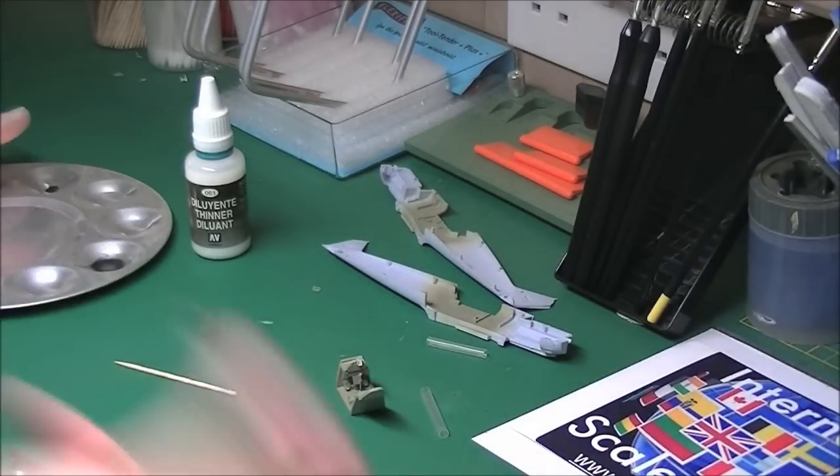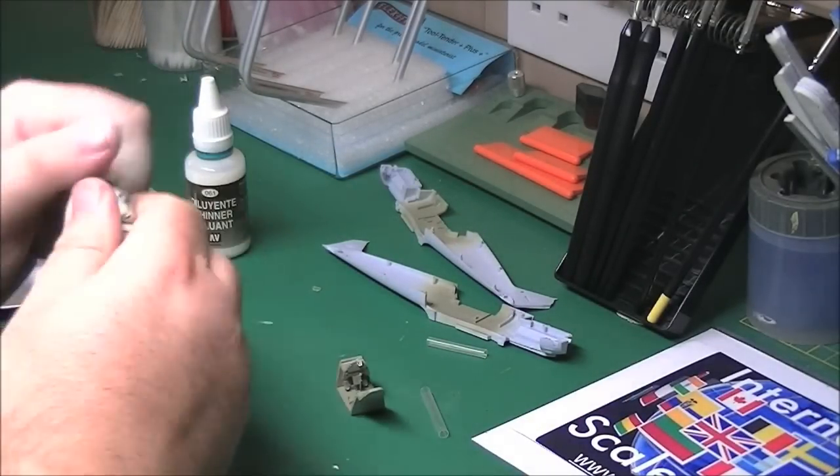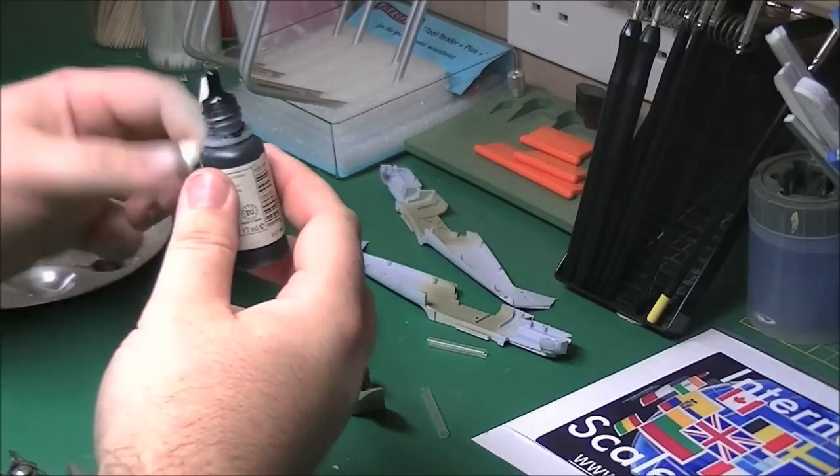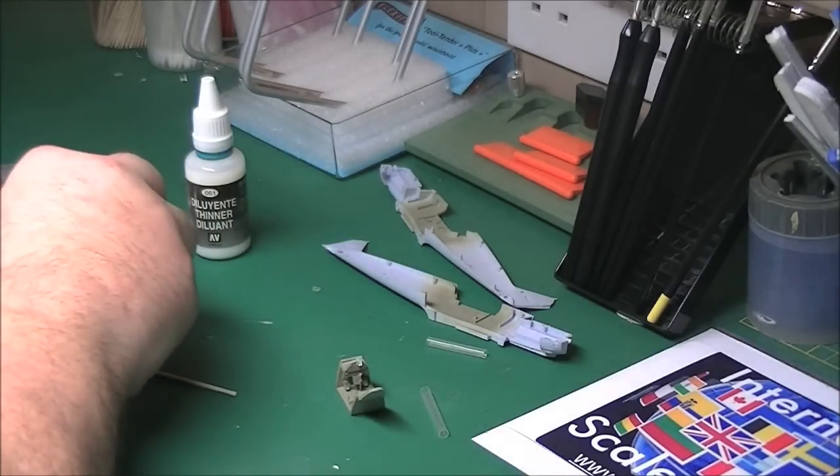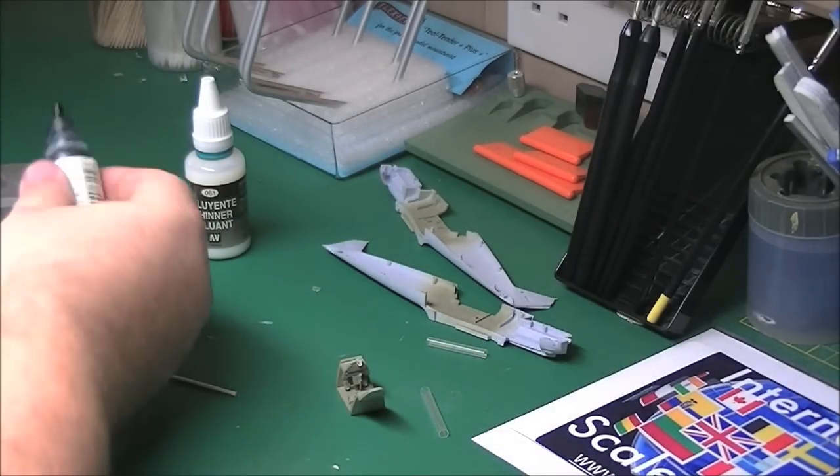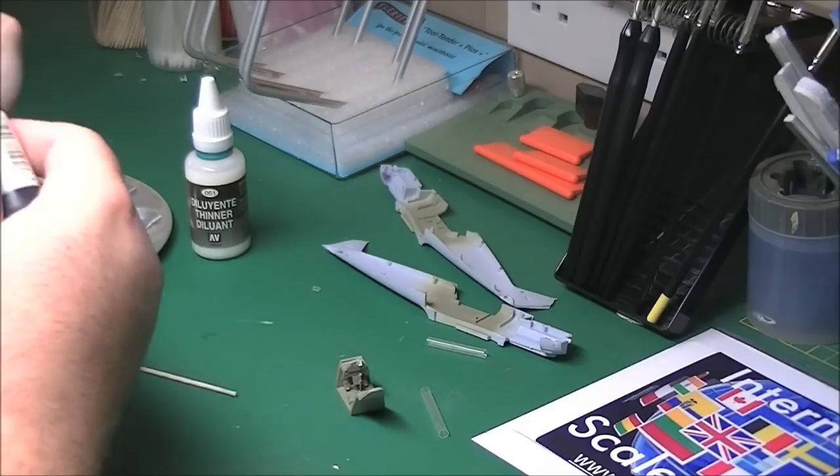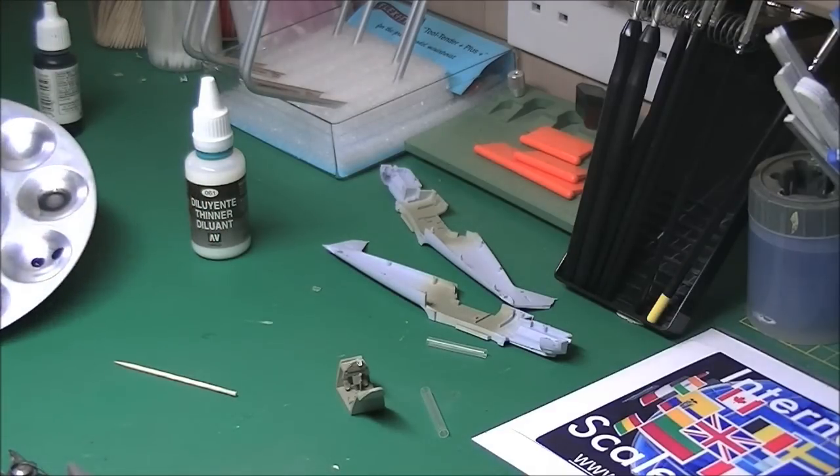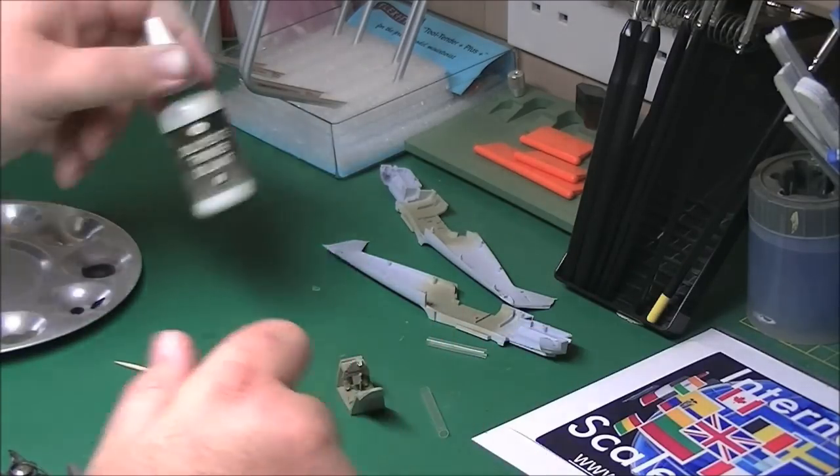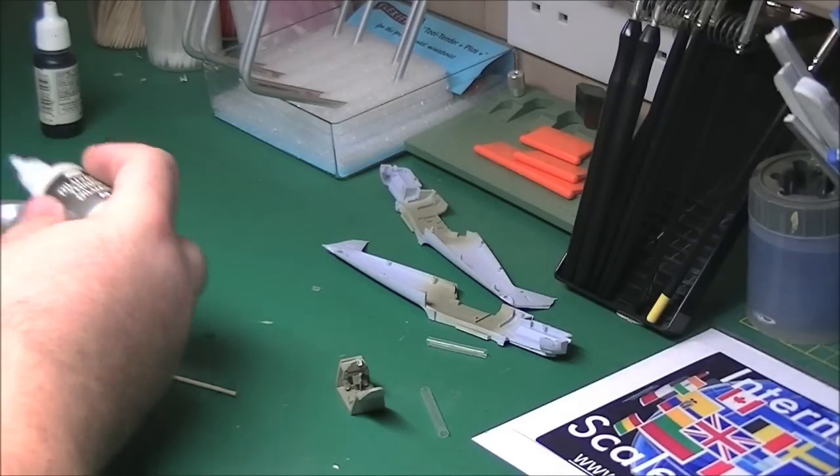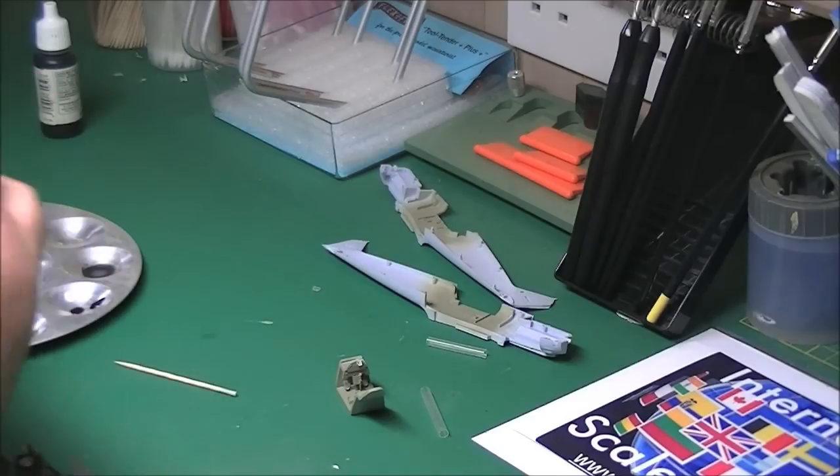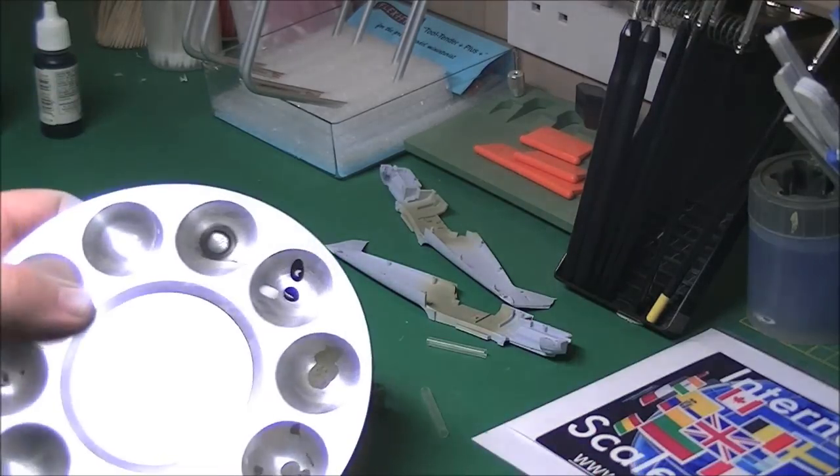So Vallejo paints, my favourite for hand painting. Absolutely superb. Can be airbrushed as well. So we'll literally put a couple of drops in there. As you can see, just in the colour in the palette. And then we'll try and mix a tiny little bit. There we go. Of thinner in there too.